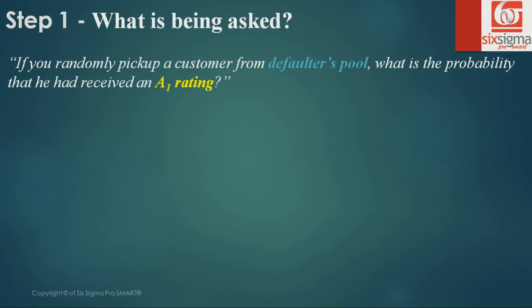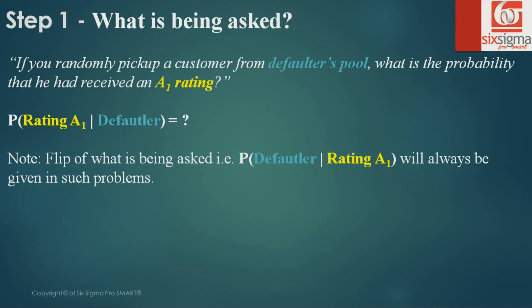This portion says: if you randomly pick up a customer from the defaulter's pool, what is the probability that he had received an A1 rating? What is being asked is: given that we have made our choice from the defaulter's pool, what is the probability that he had a rating A1? Interestingly, the moment you figure out what is being asked, you will find that the problem already contains a flip of it. When I'm being asked A1 given defaulter, defaulter given A1 will always be given in such problems.